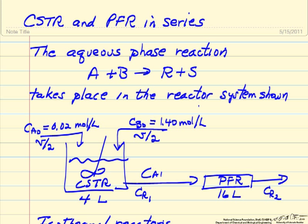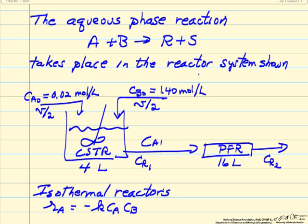In this example, we'll look at combining a continuous stirred tank reactor and a plug flow reactor in series for an aqueous phase reaction. The information that's given is the size of the CSTR, 4 liters, the size of the plug flow reactor, 16 liters, and the feed enters in two streams.